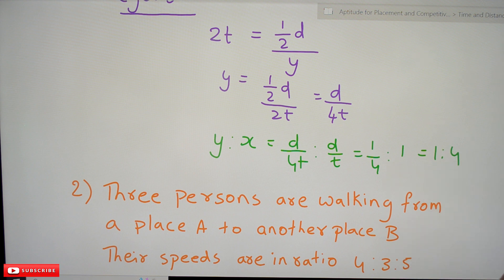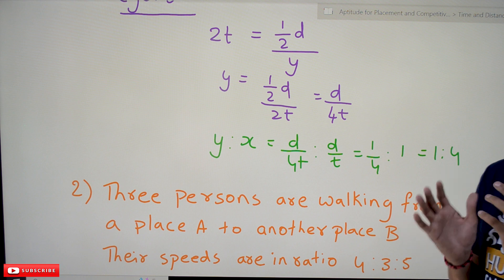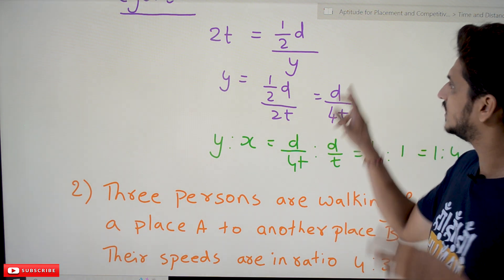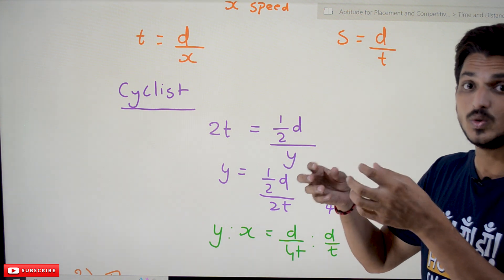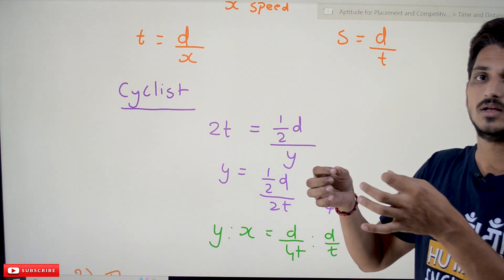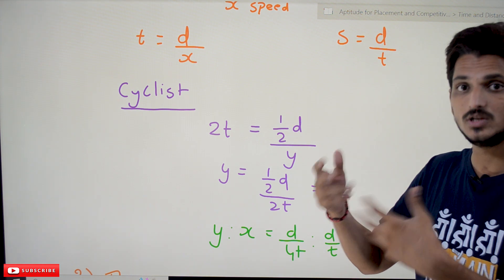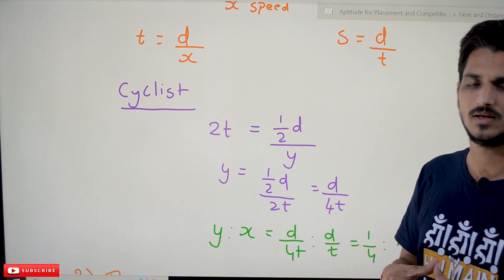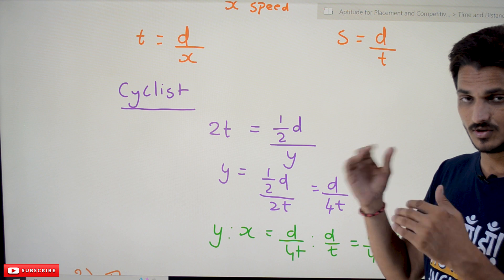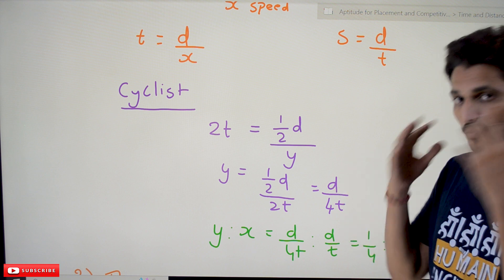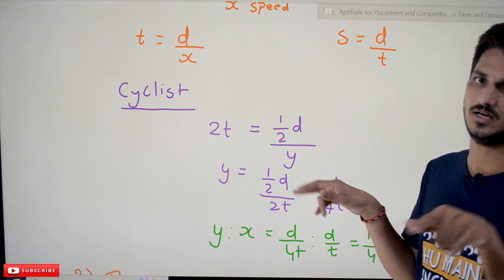This is how we identify the ratios. Whenever ratios are given, keep in mind: they don't need to give you actual distance, time, or speed values. In ratios, we can assume values and cancel them out. Ratios mean no need for explicit distance and time — we can assume because they will cancel in the ratio.